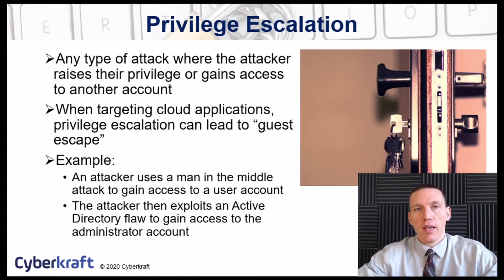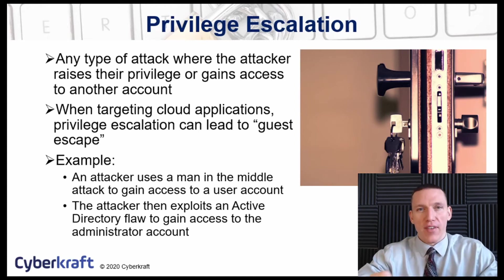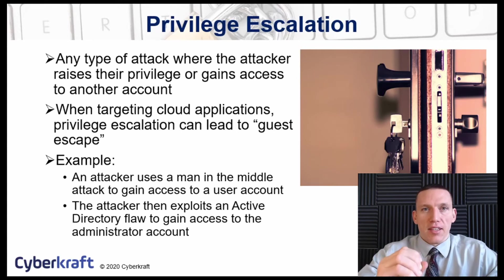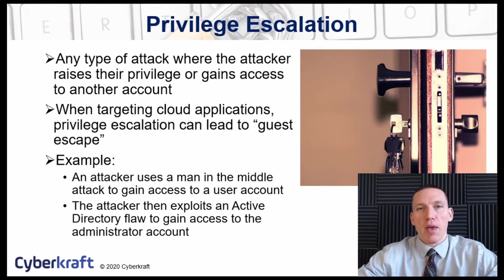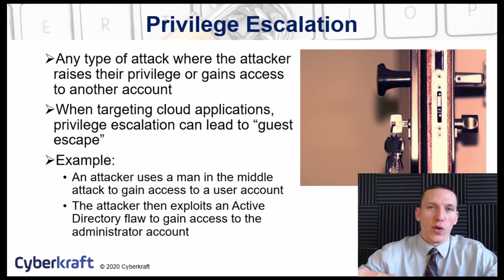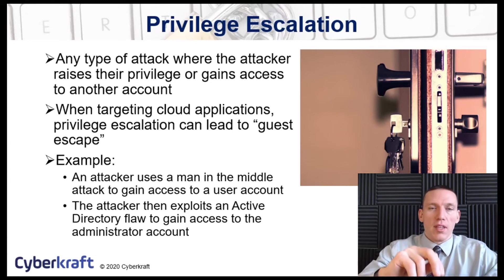Privilege escalation occurs when an attacker raises their level of access within a system beyond what they already have. This can be combined with other types of attacks. For example, continuing from the cross-site request forgery example, the attacker gains access to a website using the password change method. Now they have basic user-level access to a web application — say one that handles email.